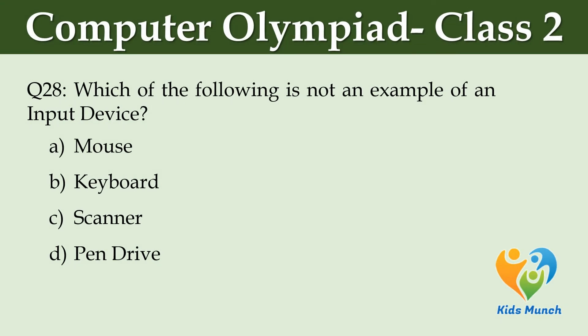Which of the following is not an example of an input device? Option A: Mouse. Option B: Keyboard. Option C: Scanner. Option D: Pen Drive.